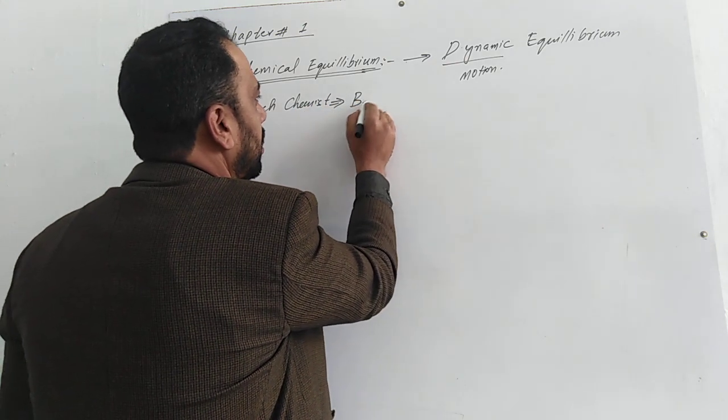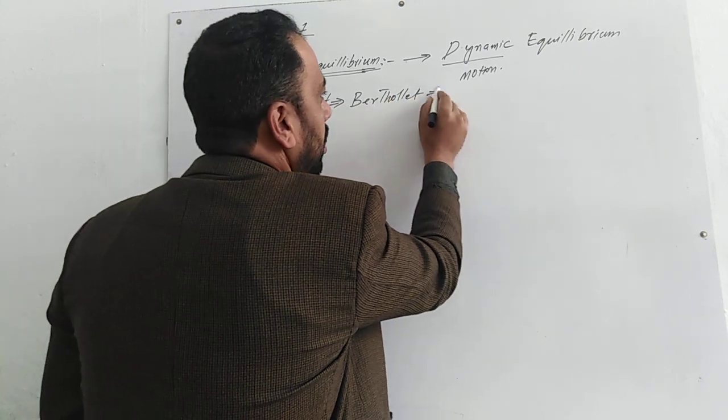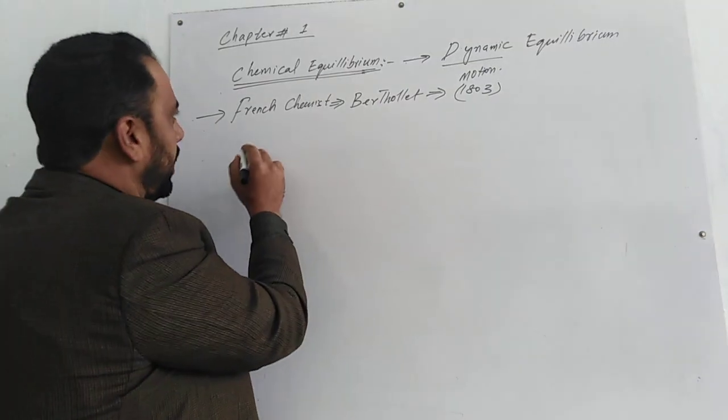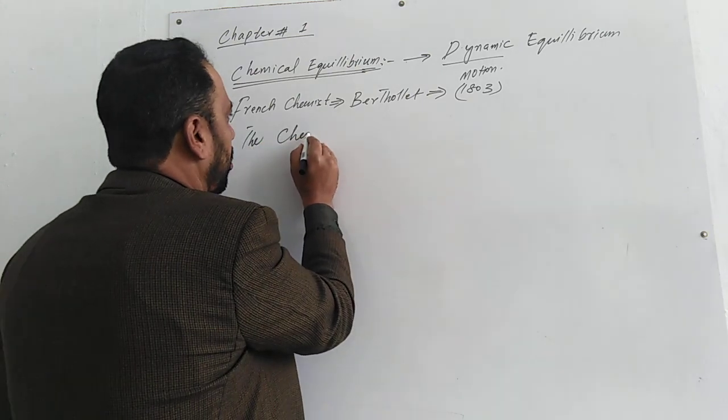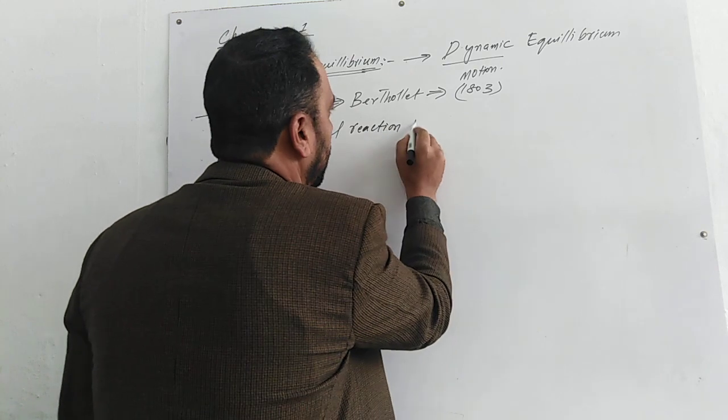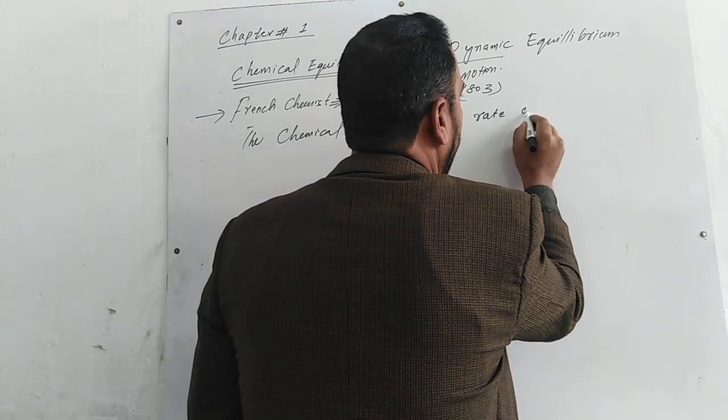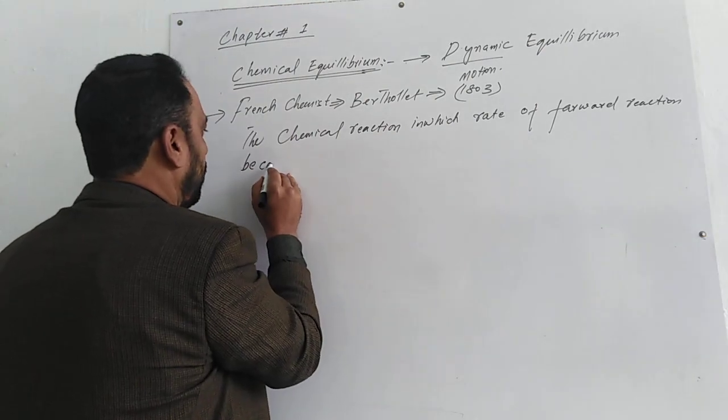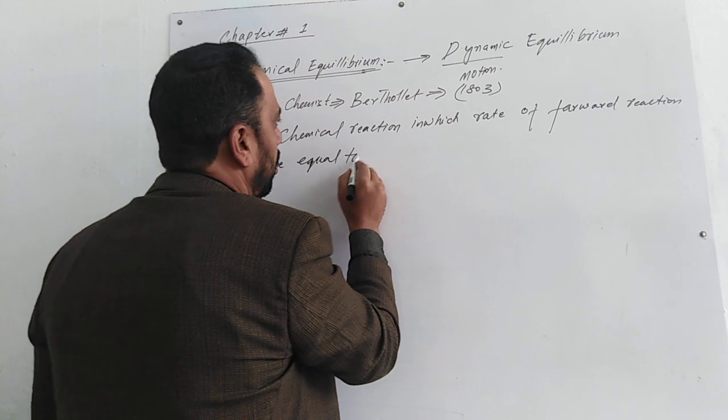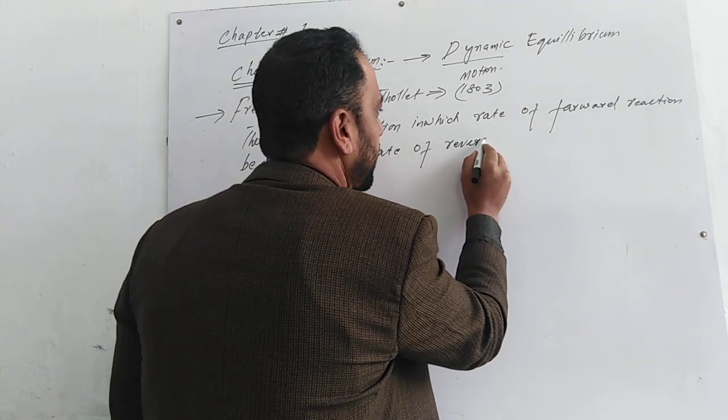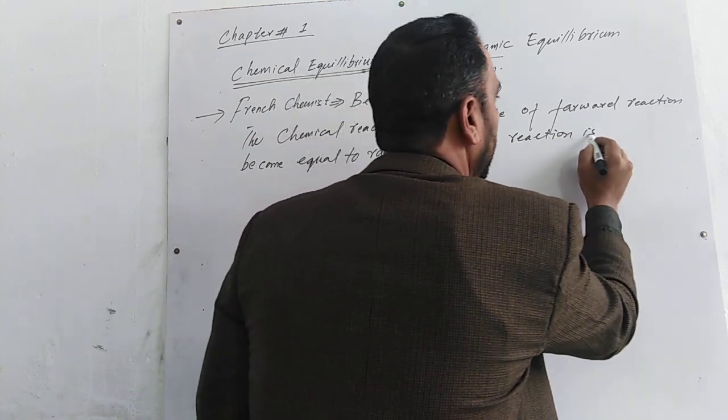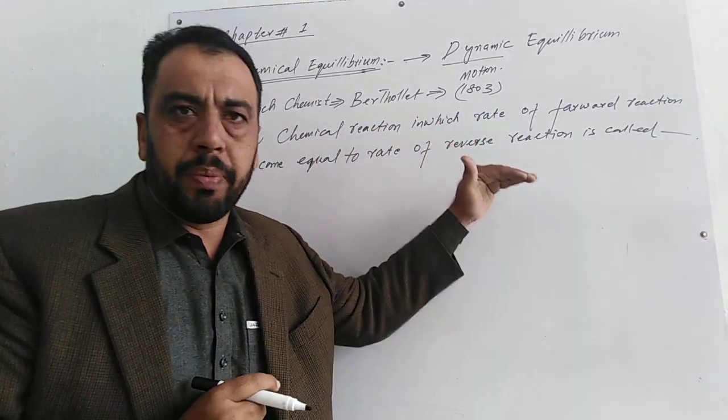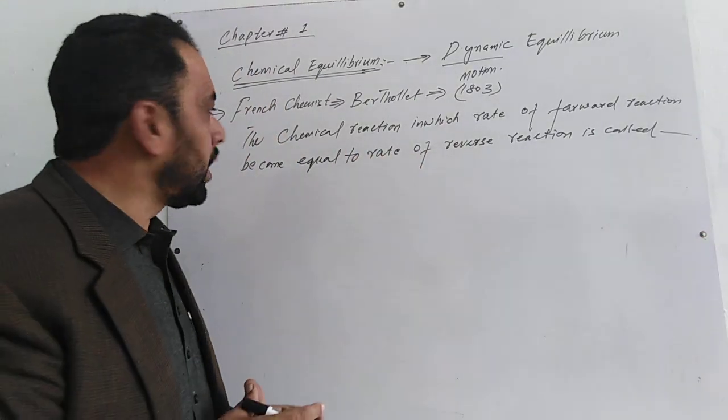Bartholet in 1803 defined chemical equilibrium. When the rate of forward reaction becomes equal to the rate of reverse reaction, it is called chemical equilibrium.